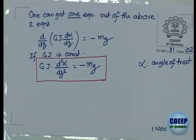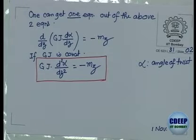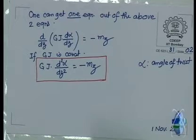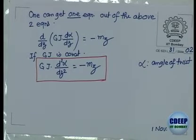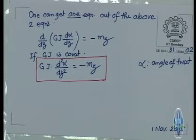Instead of alpha, it becomes u. Many problems in mechanics have a similar form. If you go to heat conduction, how heat flows inside a body — that is also governed by a simple second-order differential equation. So if you know how to solve one type of equation, you can solve the other problem also.